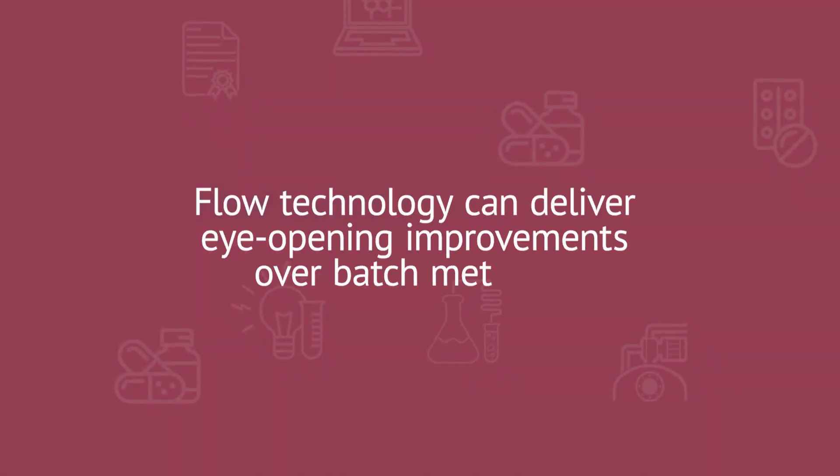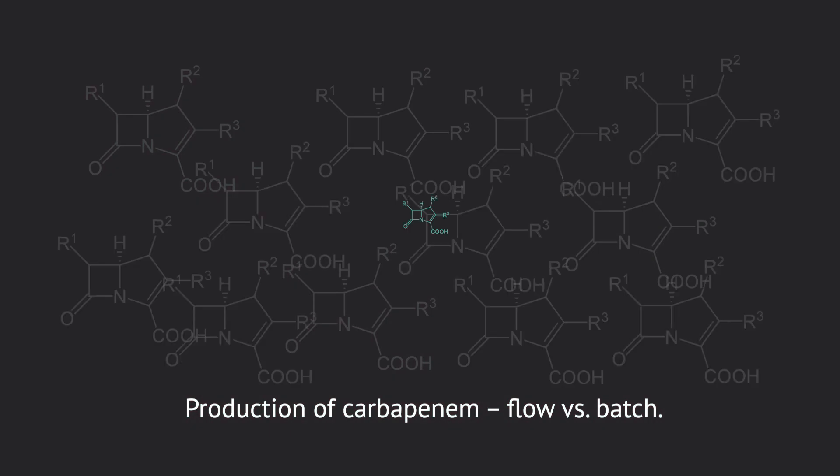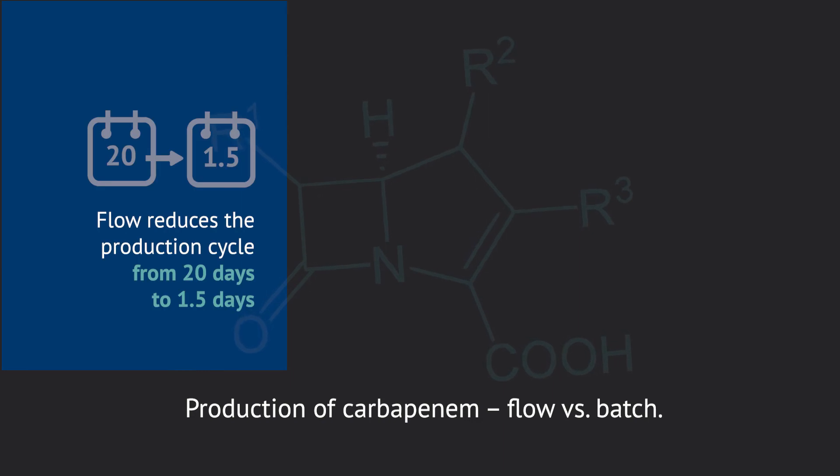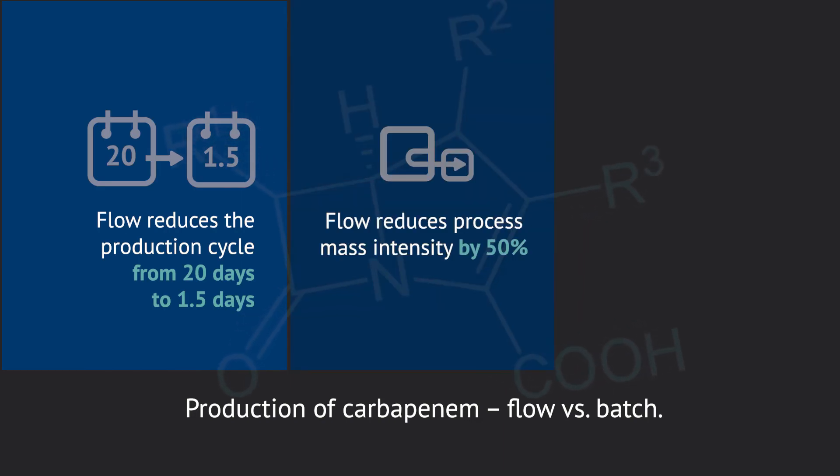Best of all, flow chemistry can deliver eye-opening improvements over batch methods. For example, compared to batch production of carbapenem, Asymchem's continuous flow technology reduces the production cycle from 20 days to one and a half days, reduces process mass intensity by 50% and avoids the expense and energy required to treat thousands of tons of waste solvents.